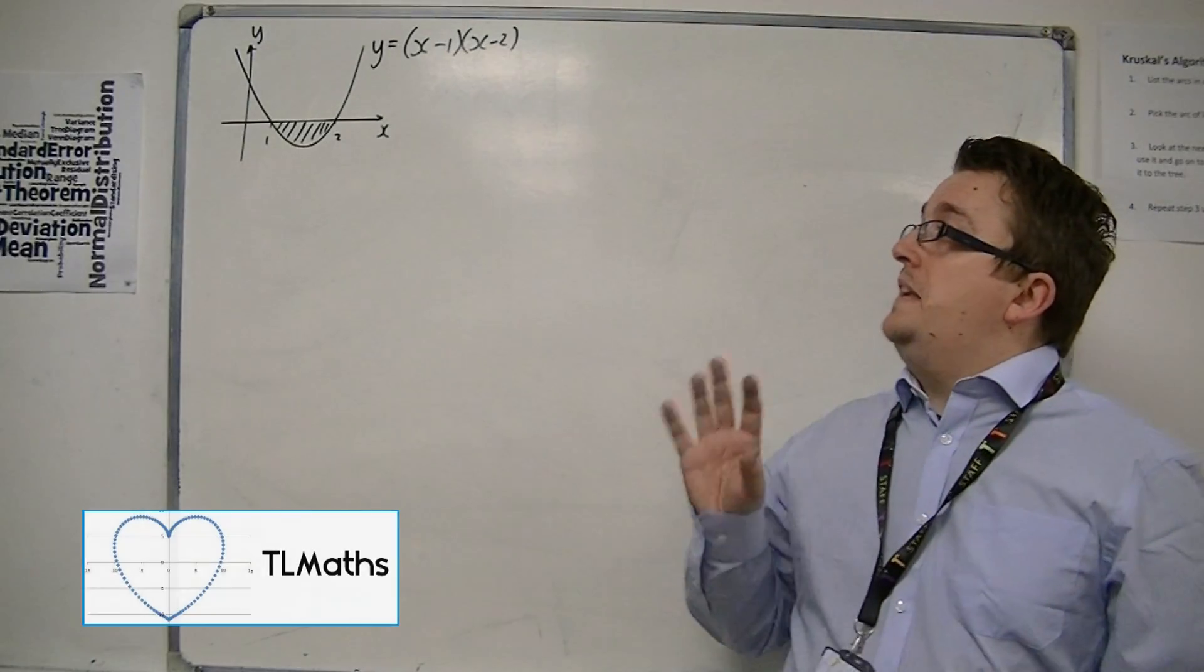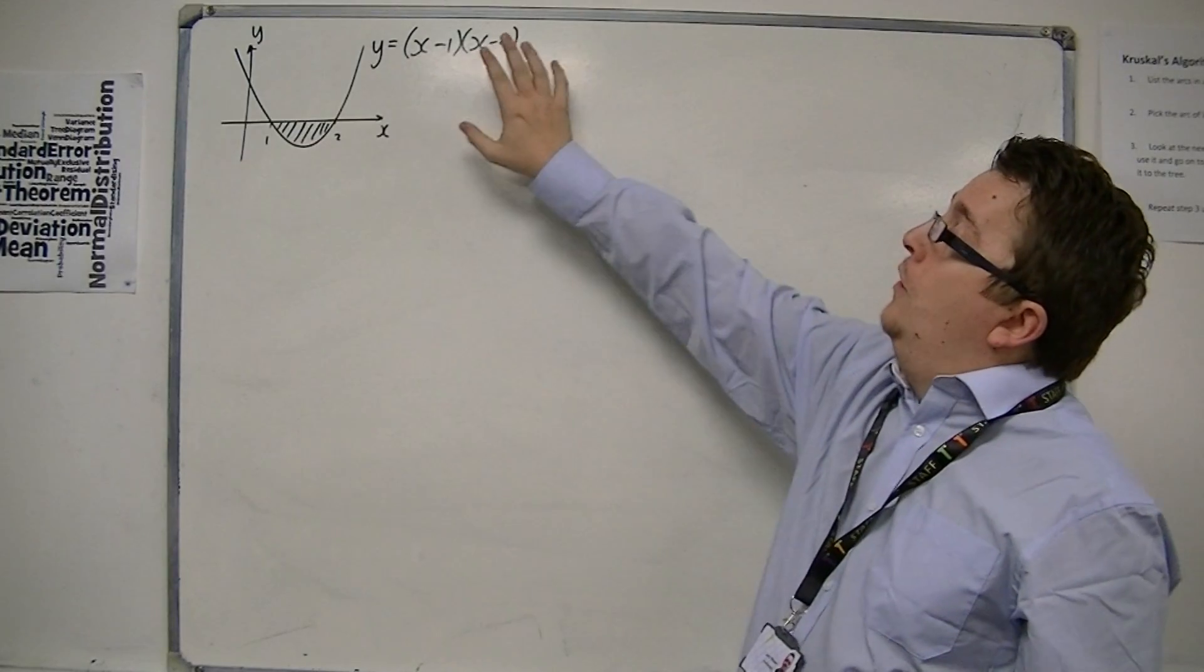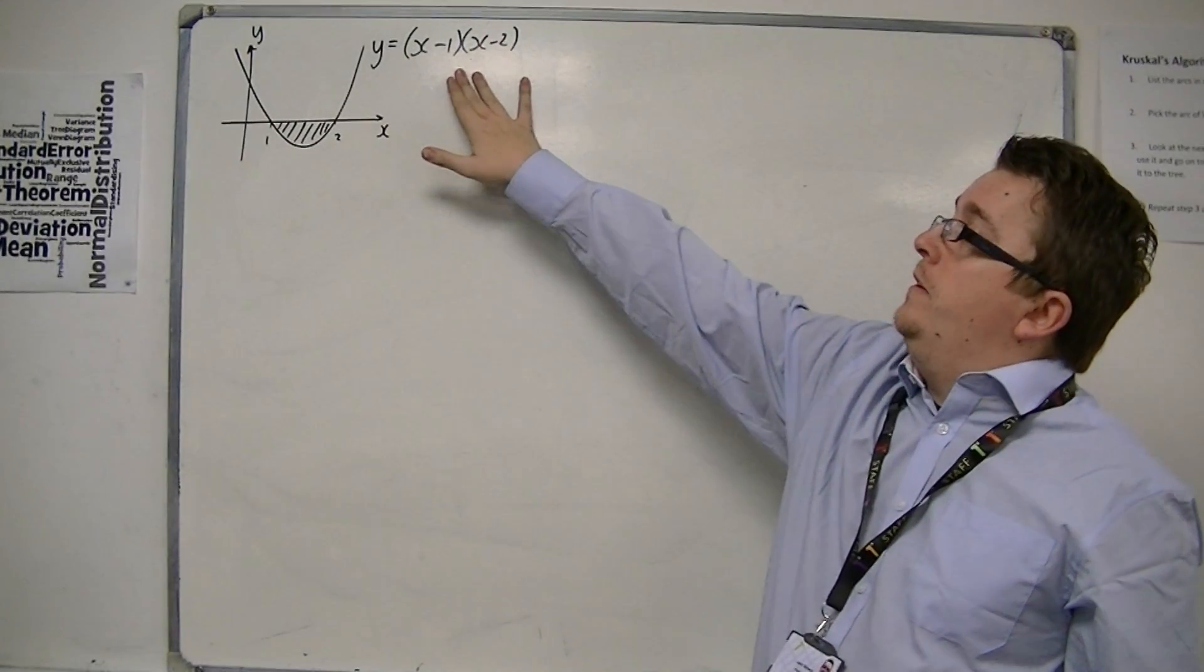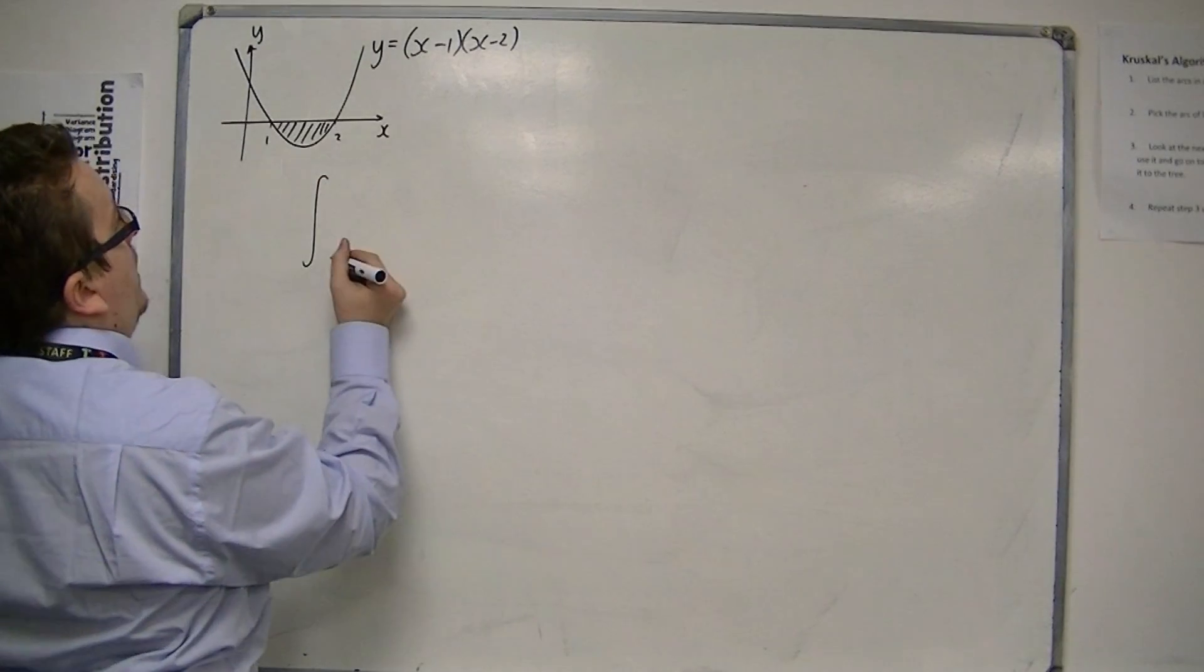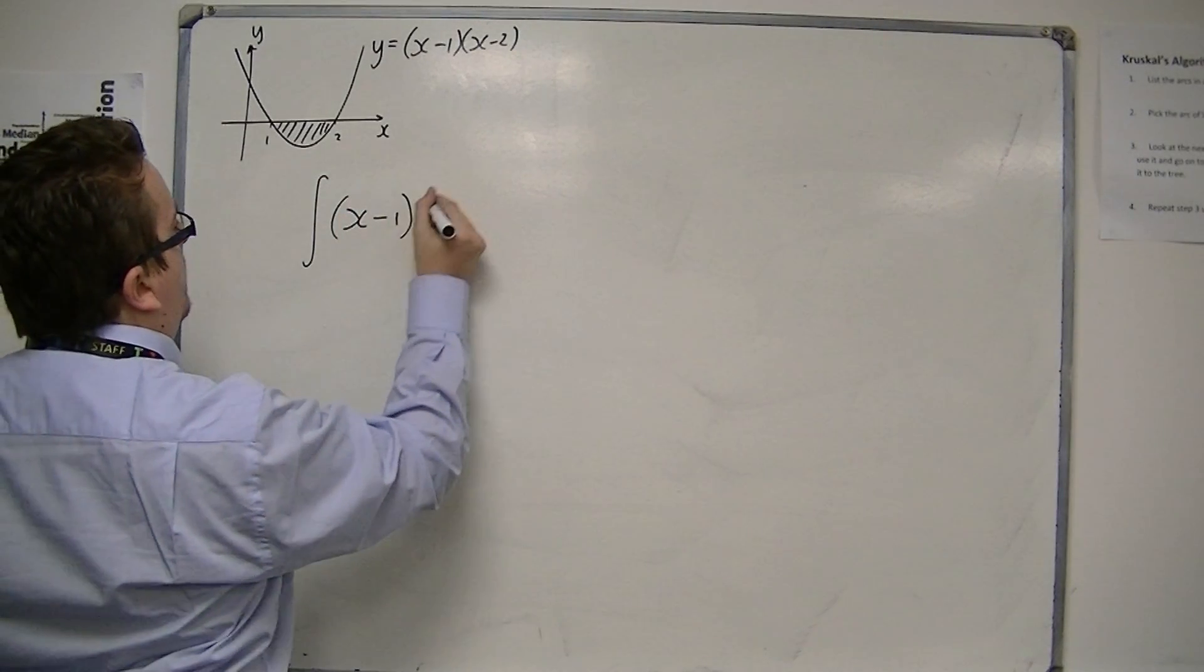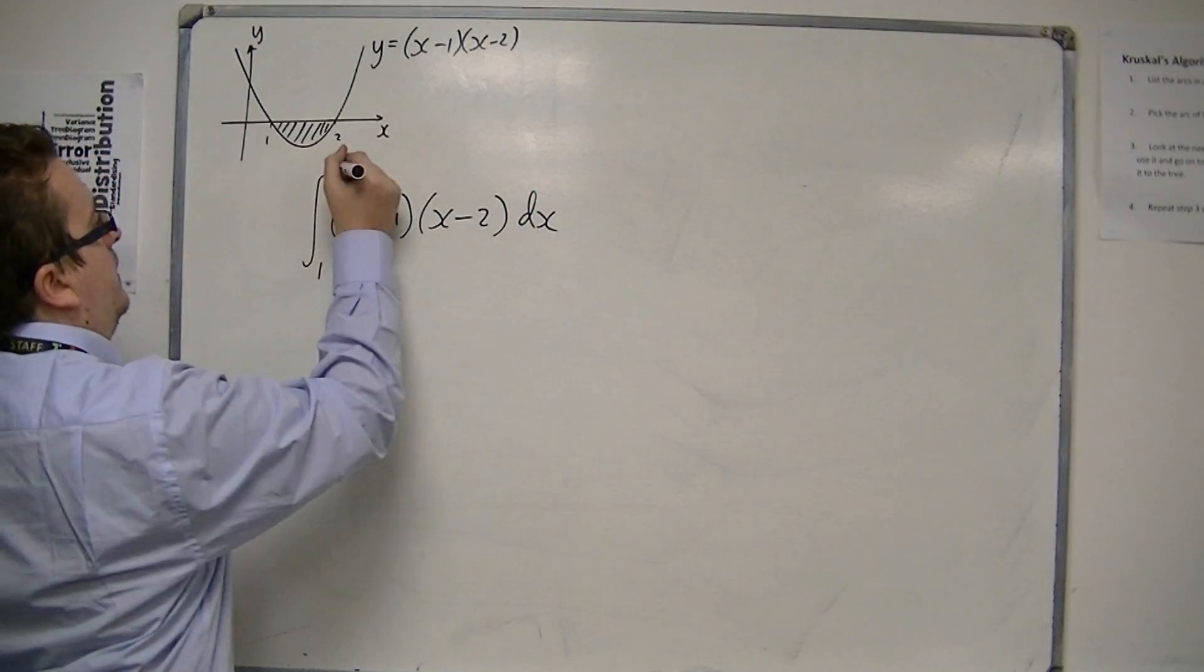Let's say I want to define the area between the x-axis and the curve for y equals x minus 1, x minus 2. So I'm going to integrate x minus 1, x minus 2, with respect to x, between 1 and 2.